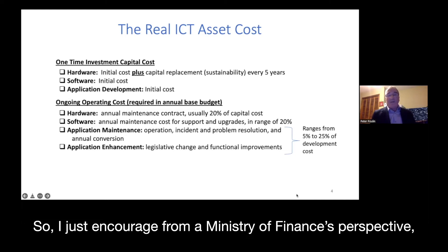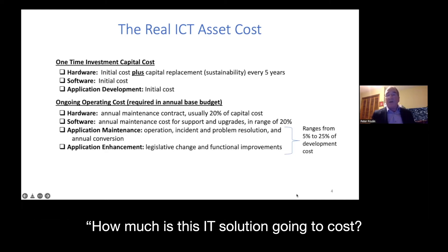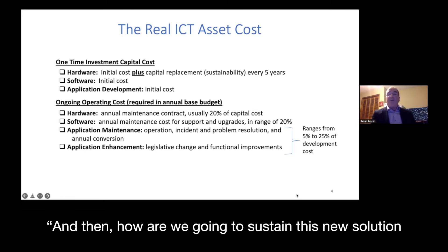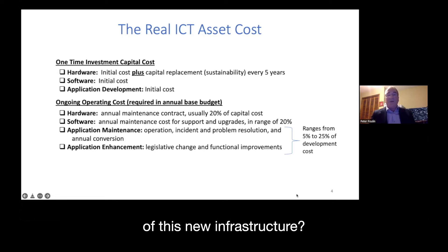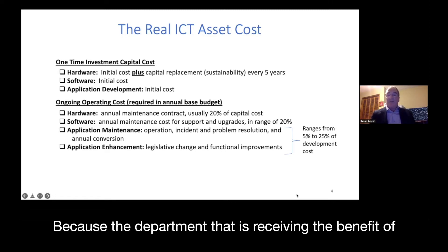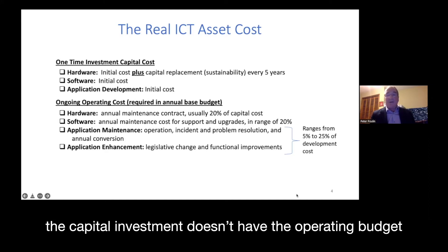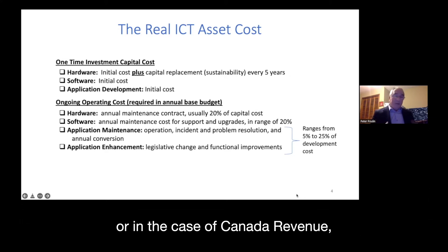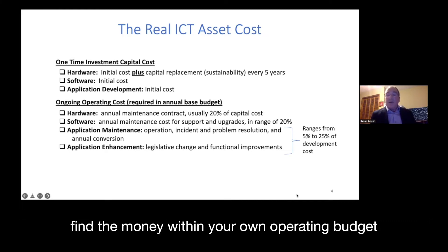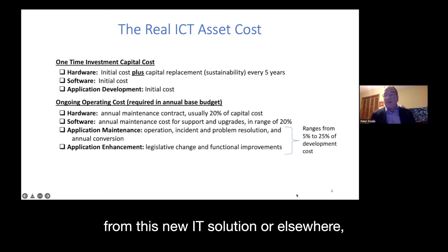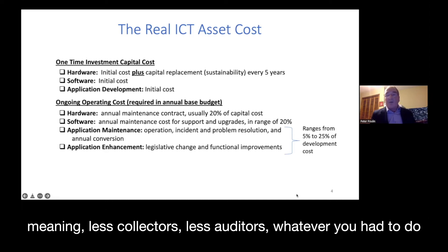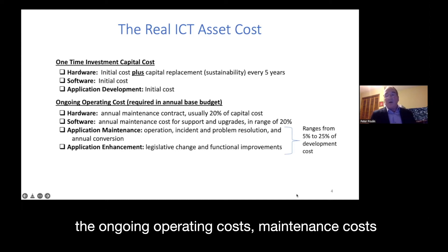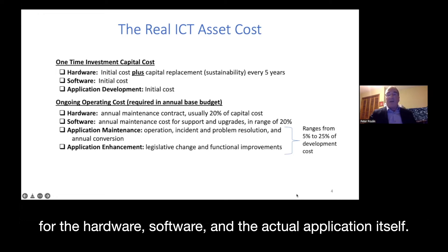From a Ministry of Finance perspective, you can't just ask how much this IT solution will cost and find the money. You have to ask: how are we going to sustain this new solution or infrastructure, and where is the money coming from? The department receiving the capital investment benefit doesn't have the operating budget to sustain it unless the Ministry of Finance increases its operating budget. In Canada Revenue, we were told to find the money within our own operating budget — through efficiencies gained from the new IT solution — meaning fewer collectors, fewer auditors, reallocating resources to cover ongoing operating and maintenance costs.